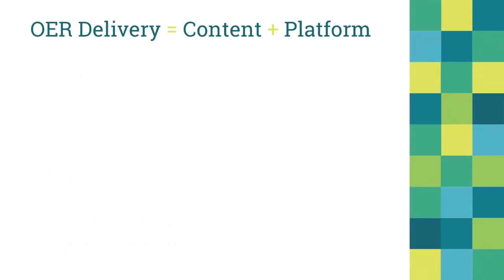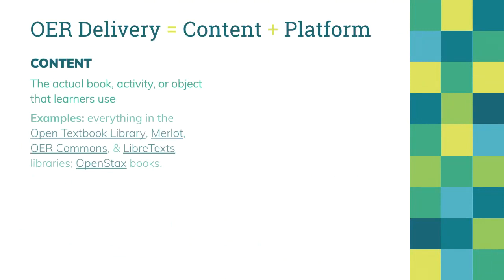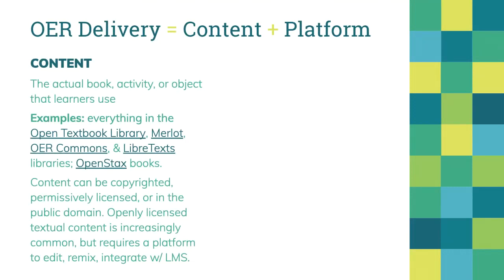When we talk about content, I'm talking about the actual book, the activity, or the object that a learner uses. Examples include the Open Textbook Library, Merlot, OER Commons, LibreTexts, and OpenStax books out of Rice. Content can be copyrighted, permissively licensed, or in the public domain. What we're seeing in higher ed is that openly licensed content is becoming increasingly common — that's the story of the textbook price flattening out.